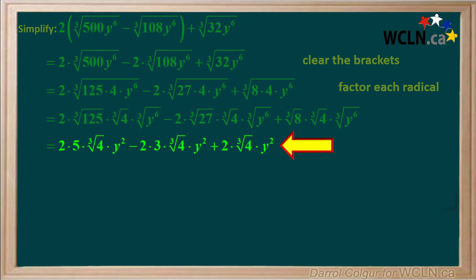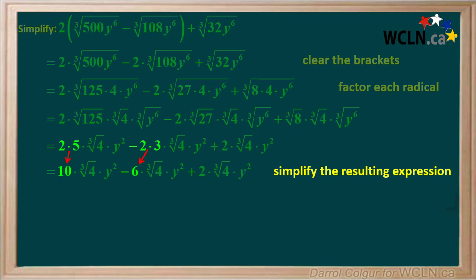So now we have this expression, which we can now simplify. 2 times 5 equals 10, and negative 2 times 3 equals negative 6. So now we have this.